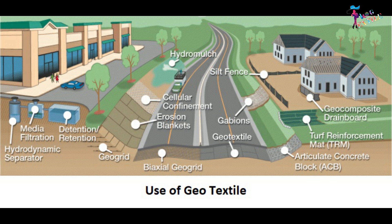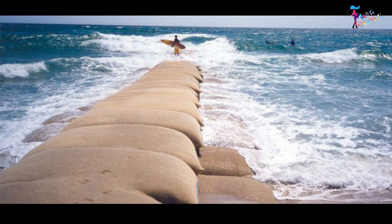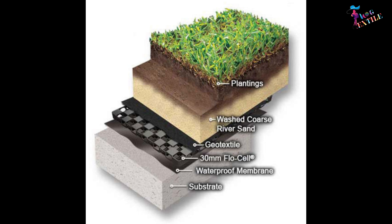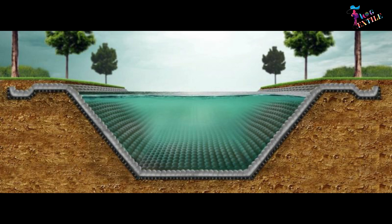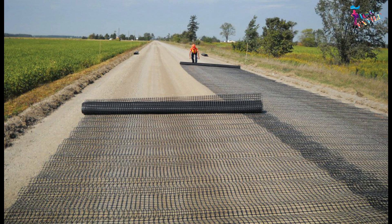Textiles are also a big part of agriculture and ecosystem management. Specifically, we use permeable fabric called geotextile to help control erosion and maintain soil stability. It's a textile owned not by us, but by the earth.